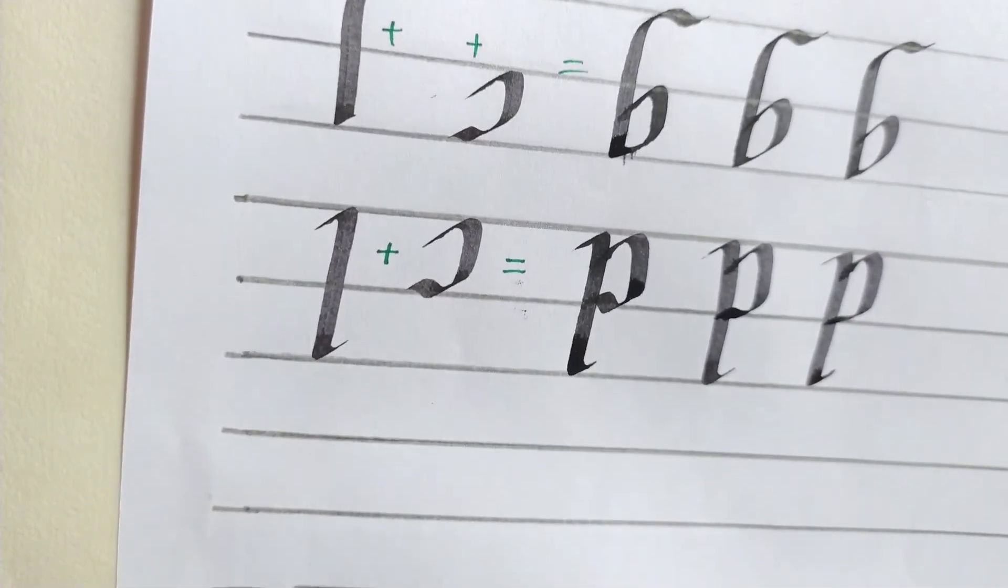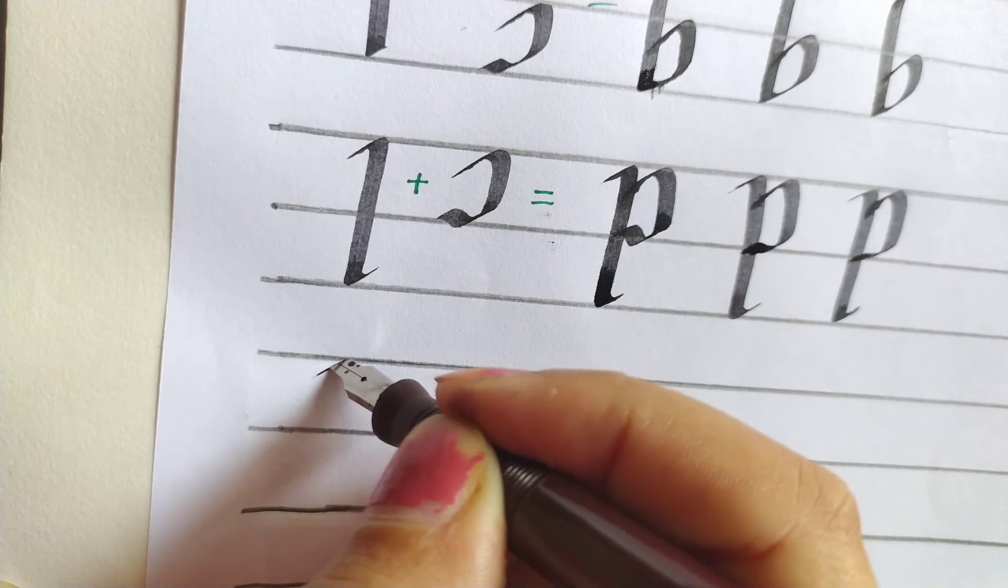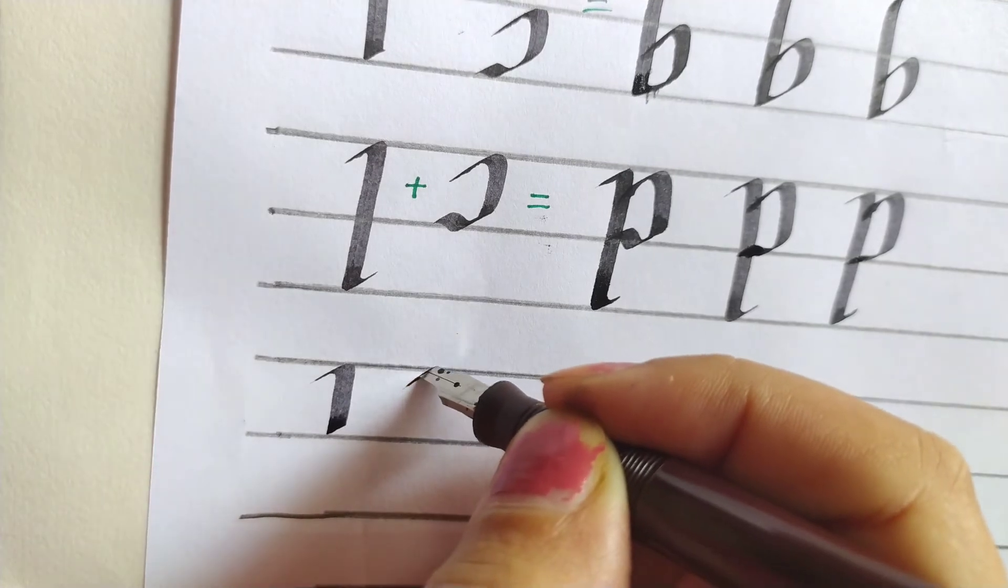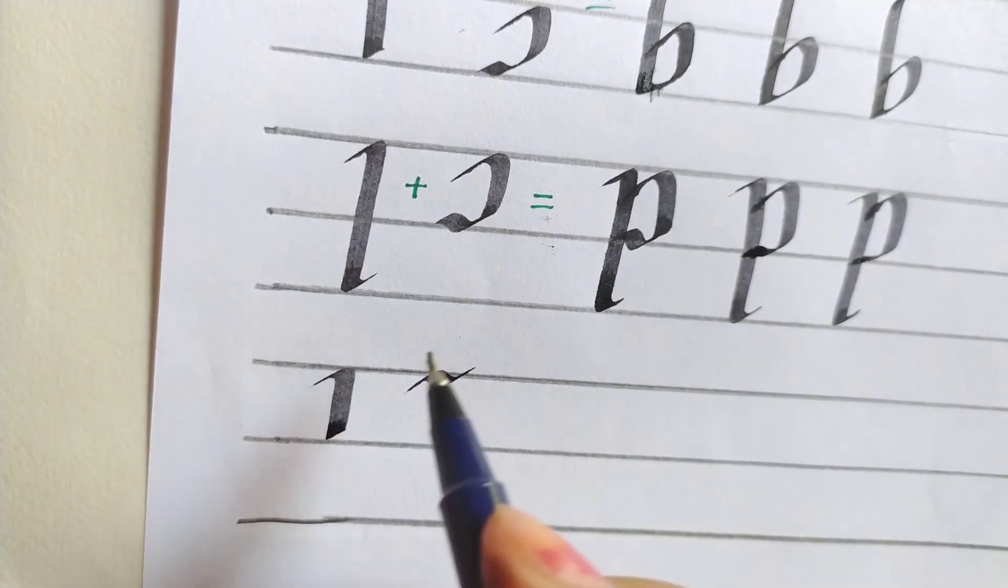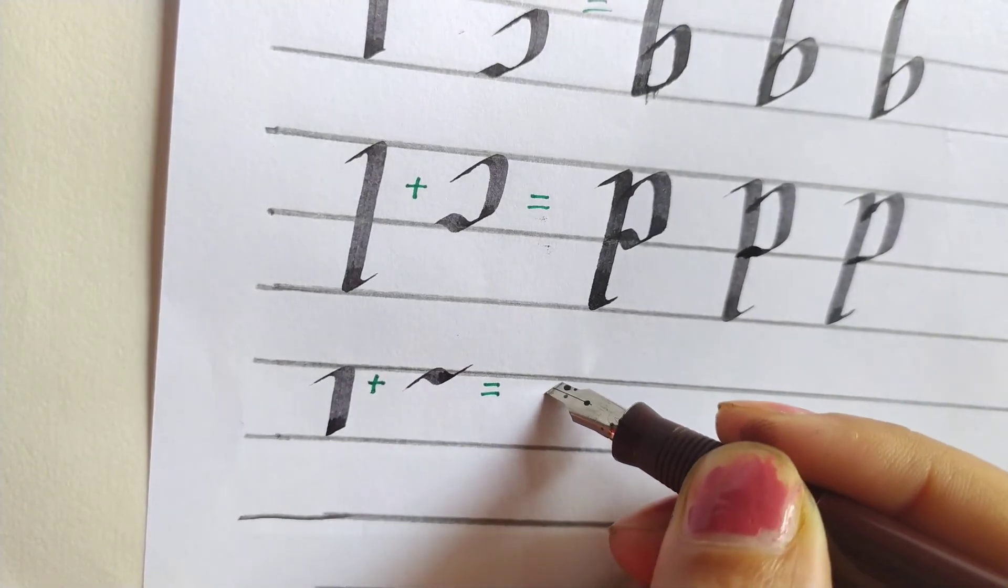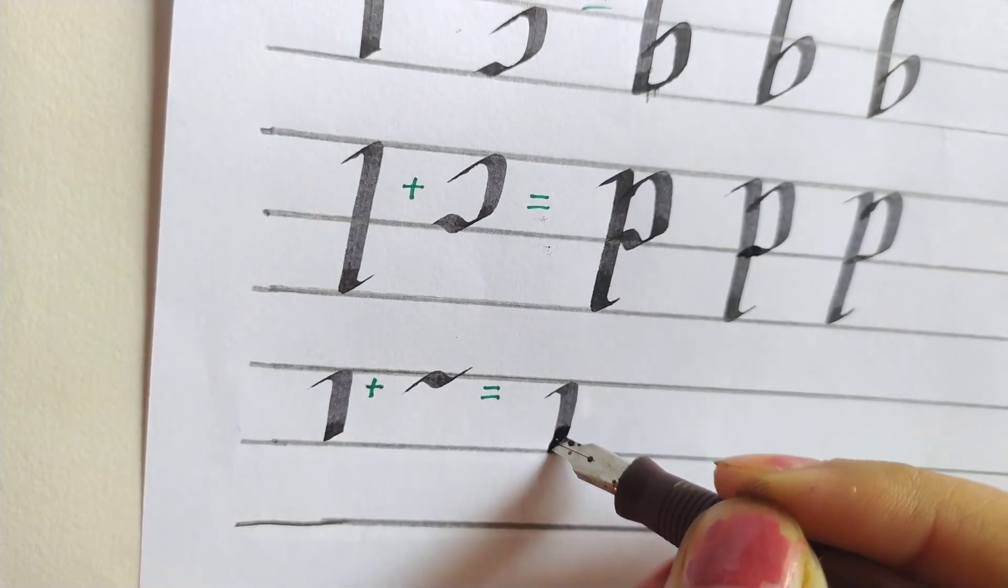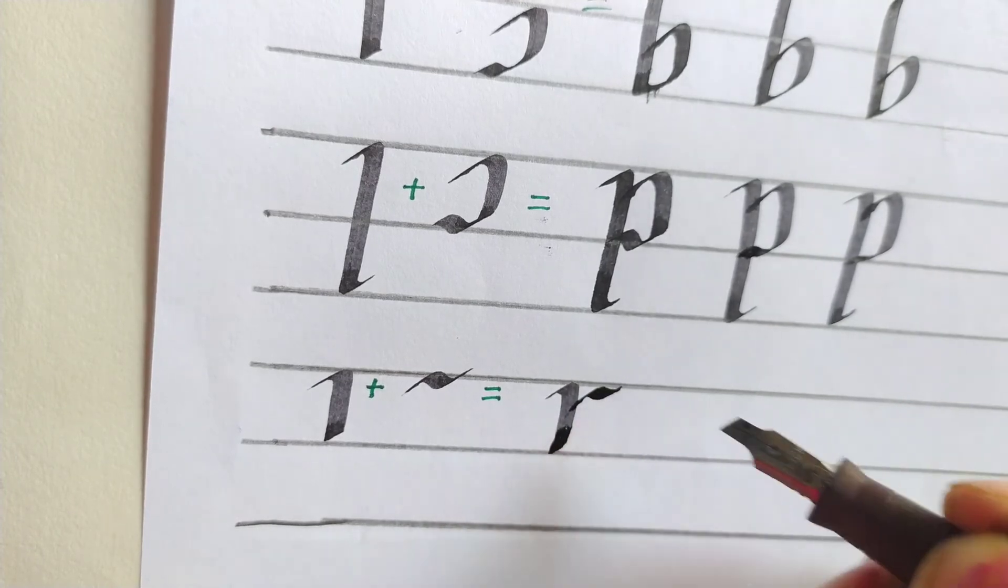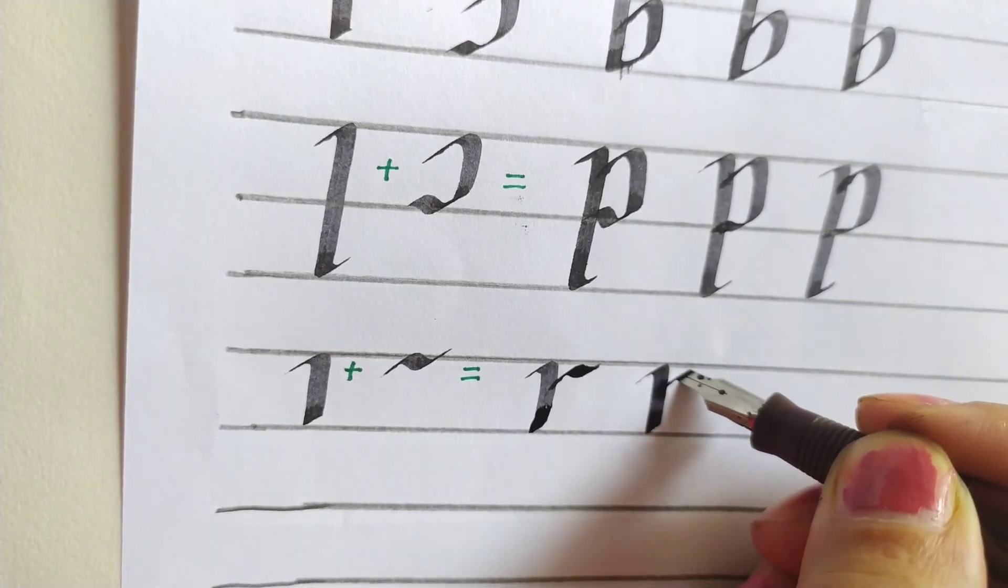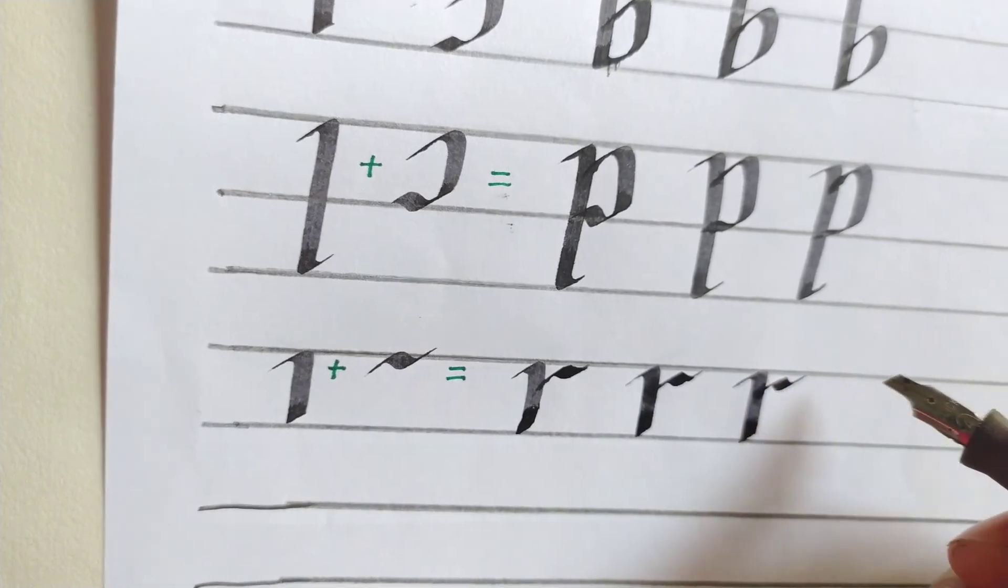Now finally we are going to write alphabet R. So one and two. This will become alphabet R. Try to make a clear and smooth cut.